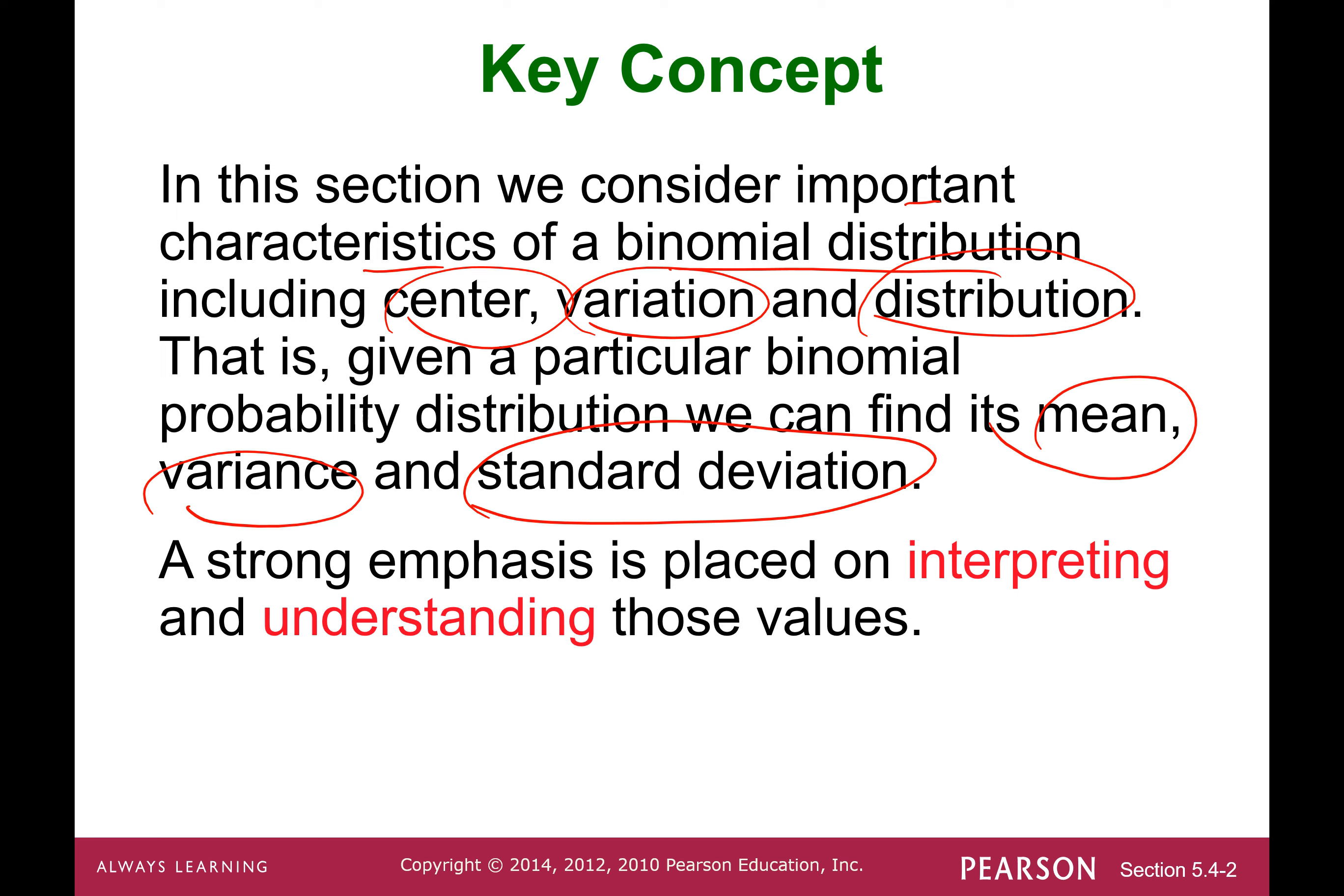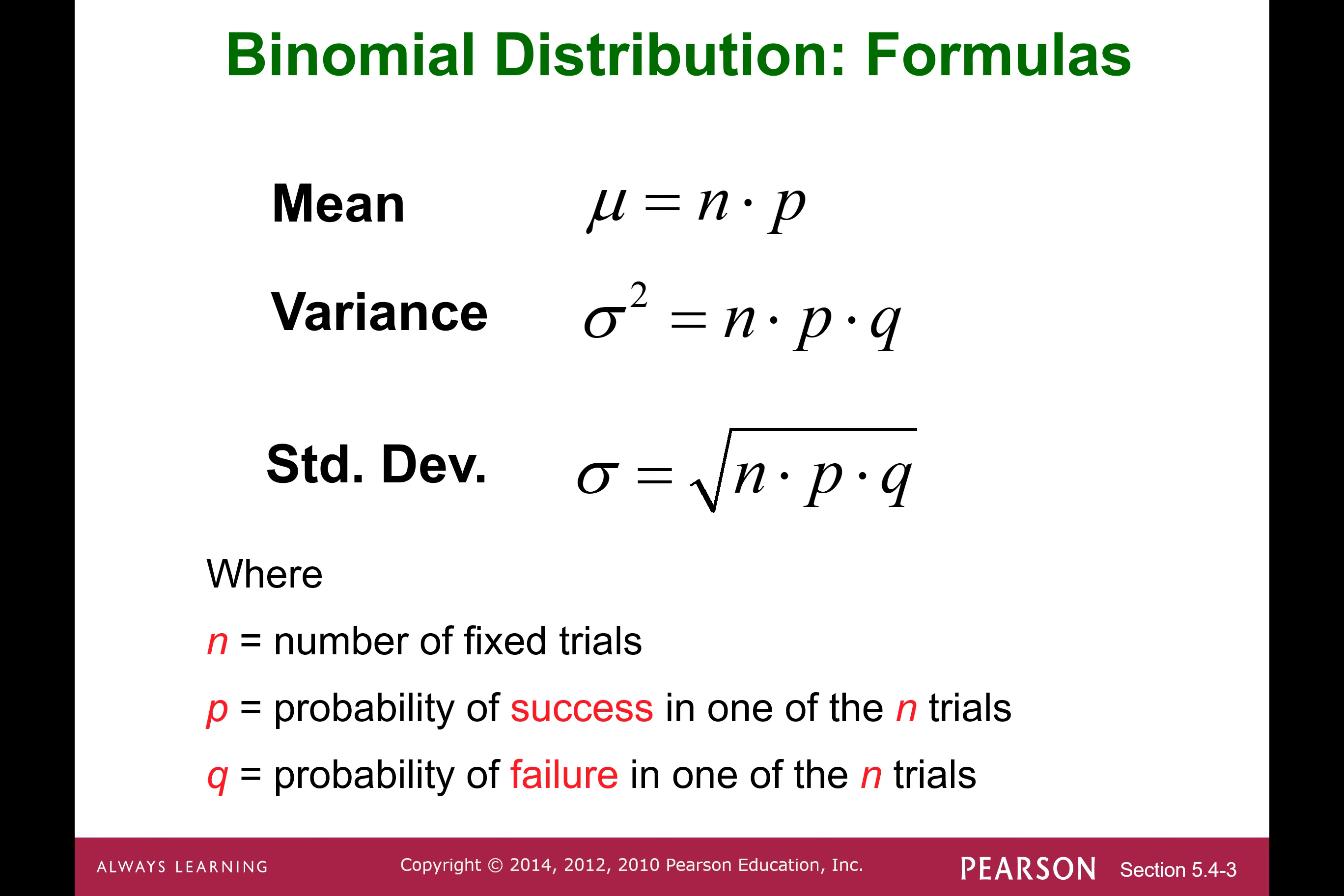We're going to emphasize how to interpret those values and understand them. This is the binomial distribution formula for the mean. The mean equals n, the sample size or number of fixed trials, times p, probability of success. Variance equals sigma squared equals n times p times q, where q is probability of failure in one of the n trials. Standard deviation sigma equals square root of n p q.